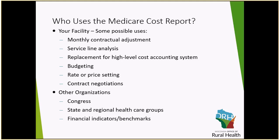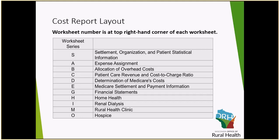Congress looks at the Medicare cost report data as a whole, and so do many other state and regional healthcare groups, organizations, and cooperatives. They use this data compiled together to hopefully help out all of our rural facilities with benchmarking and financial data. So the cost report is laid out in a sequential, or almost sequential, series of worksheets.